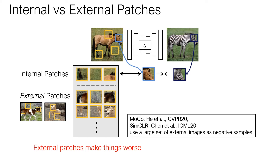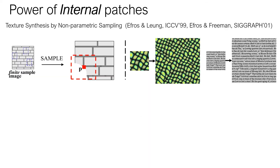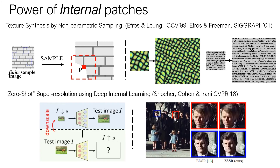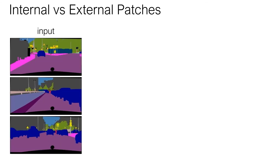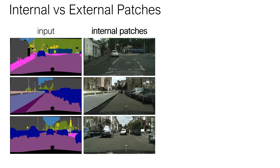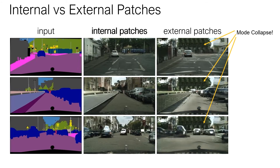We hypothesized that it's because the external patches are too easy to distinguish, and they sometimes contain false negatives, like the highlighted horse head patch. In fact, the power of internal patches has been well-known in classic texture synthesis work. More recently, in a paper from the Weizmann Institute, training a super-resolution network on the same but down-sampled image can lead to competitive performance compared to other methods trained on the entire dataset. Likewise, our model fully leverages the internal statistics of a single input image. Here's a visual comparison of using internal versus external patches. Compared to our default method, using external patches causes more artifacts and signs of mode collapse.